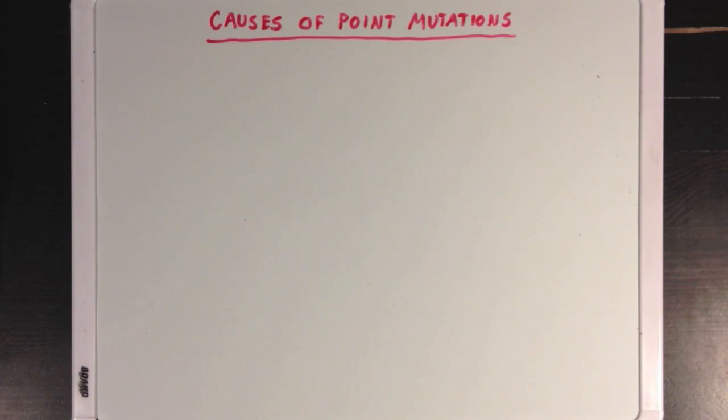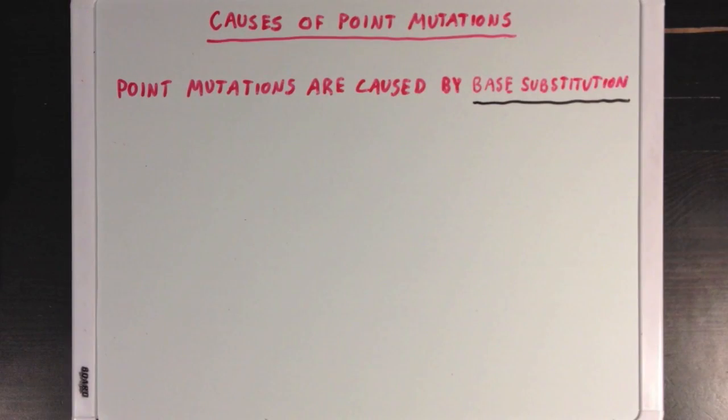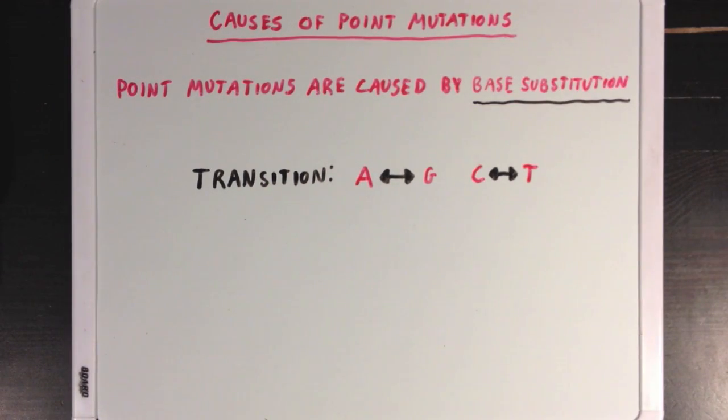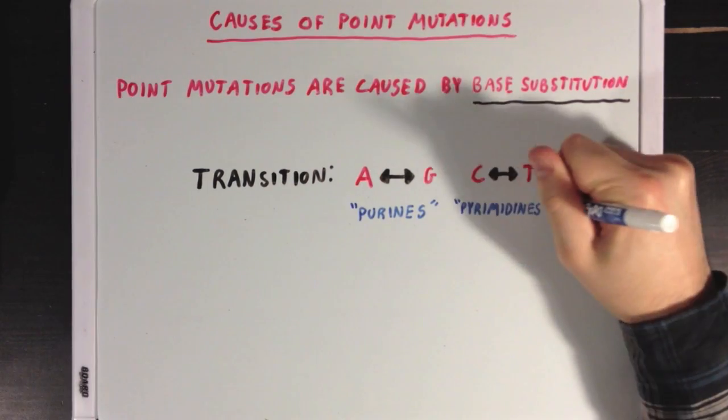So point mutations are caused by base substitution, which is when one DNA base is substituted for another. And there are a couple of different types of base substitution. A transition is when you have a substitution of adenine for guanine, or vice versa, which is a swap between two purines, or a substitution of cytosine for thymine, or also vice versa, which is a swap between two pyrimidines.